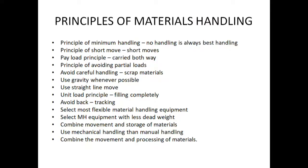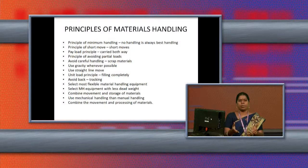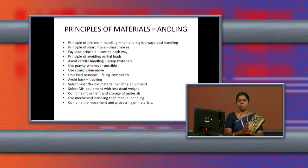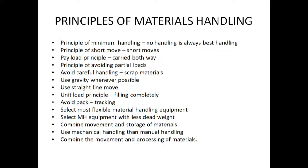The next principle is to select more flexible material handling equipment — whichever equipment is most useful for a particular production process. We have to decide and then choose the equipment. Another principle is to select material handling equipment with less dead weight. The equipment itself should not be very heavy, because we need more fuel to carry the empty equipment. For example, JCBs and cranes are already very heavy, so we should use lighter material handling equipment.